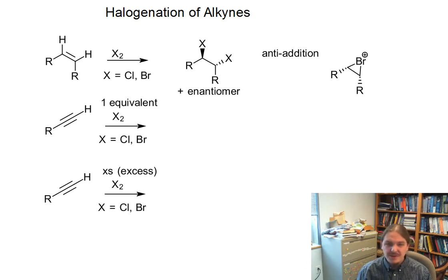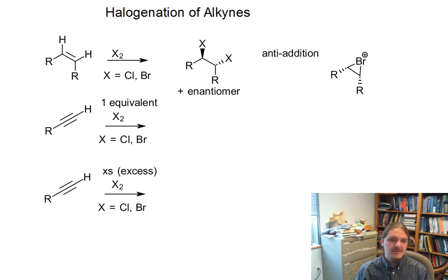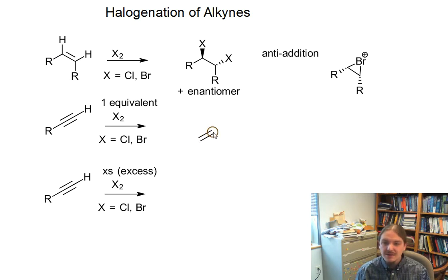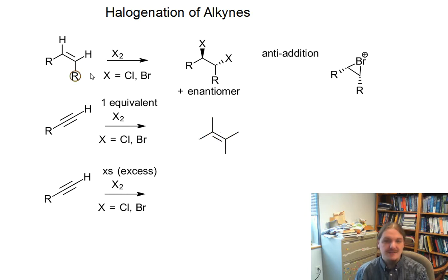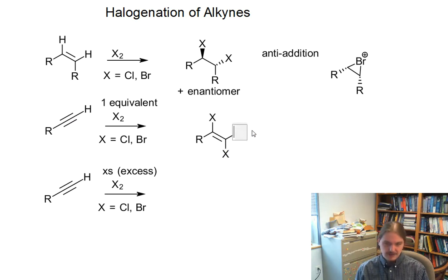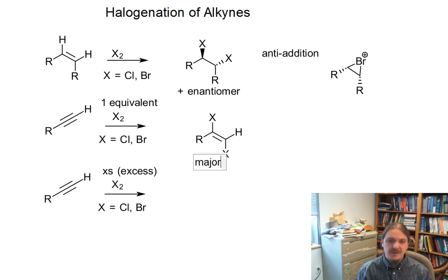Things are a little bit different in the alkyne world, but generally most things alkenes do, alkynes can do twice. It's possible that if you have just one equivalent of a halogen molecule, you can get addition of that halogen across the alkyne and make a dihalo alkene.